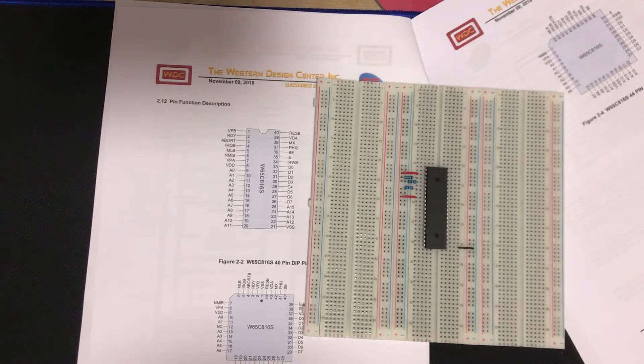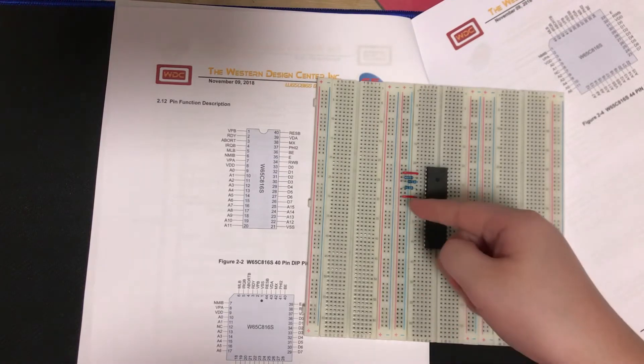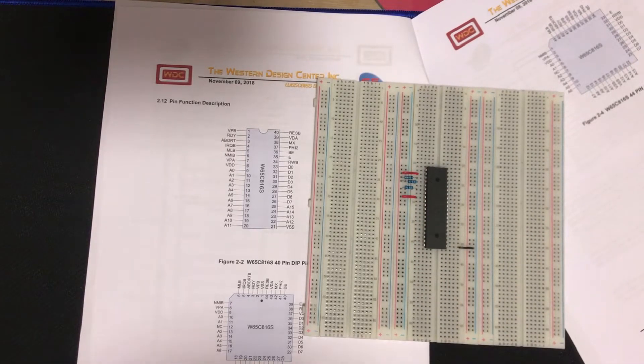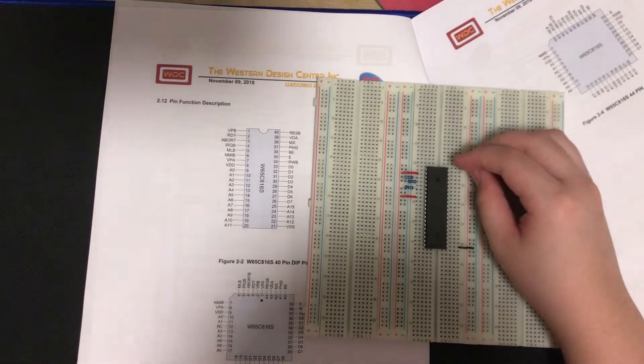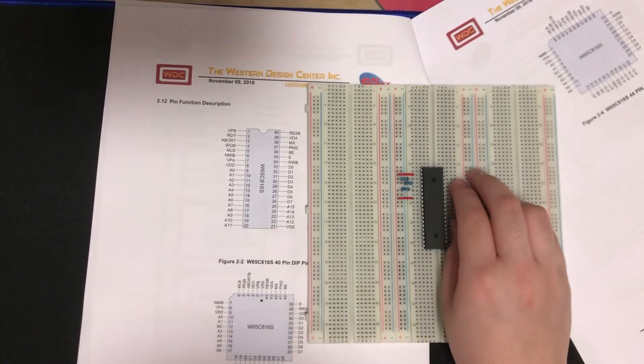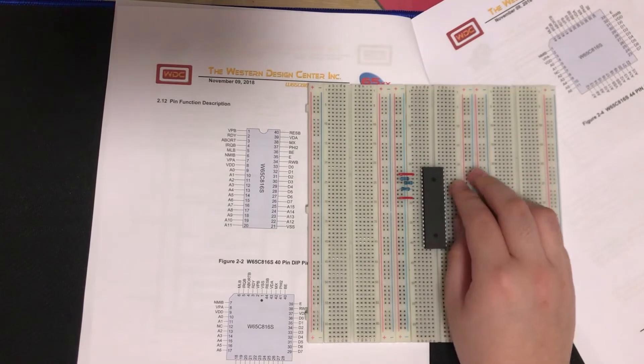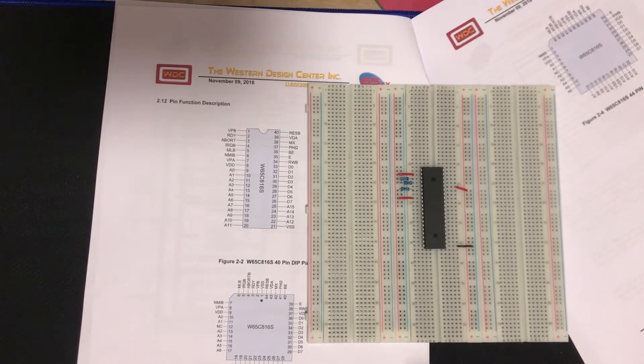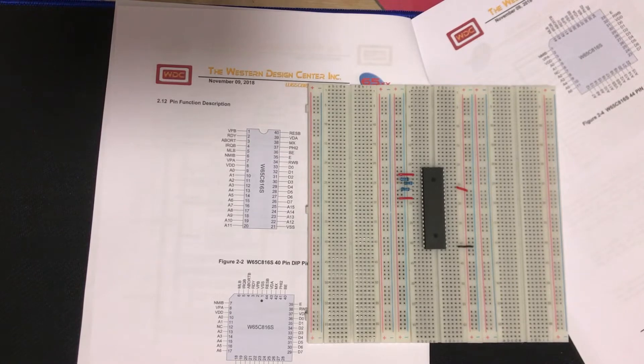Pin 36 is bus enable. So what that does is, if bus enable is tied high, the address lines and the data lines will be able to output data. That's crucial for us, so we need to tie that high. The next pin is PHI2, which is the clock input. For now, I'm going to leave that empty because we're going to design our own clock out of a 555.